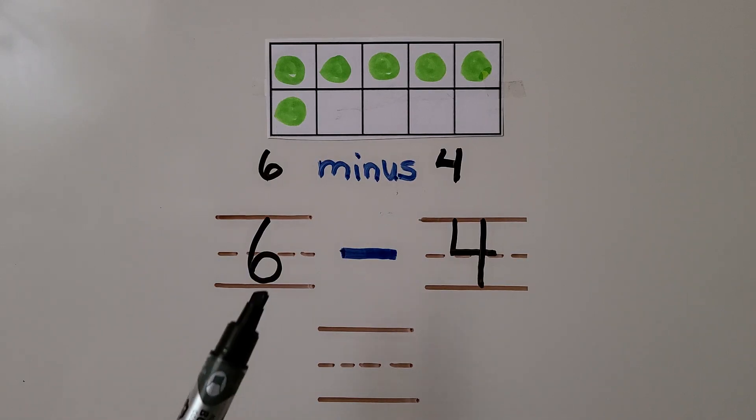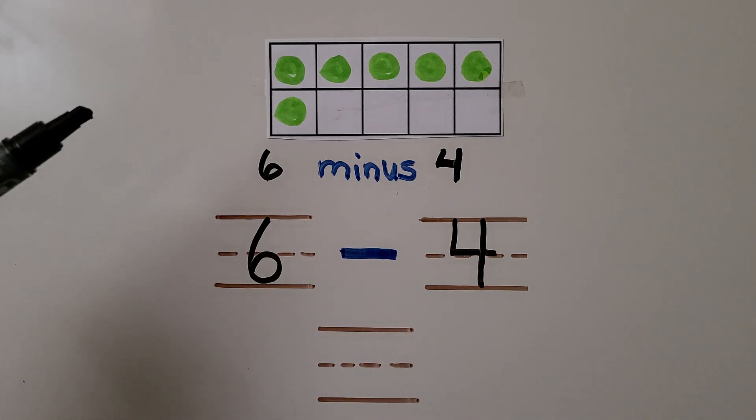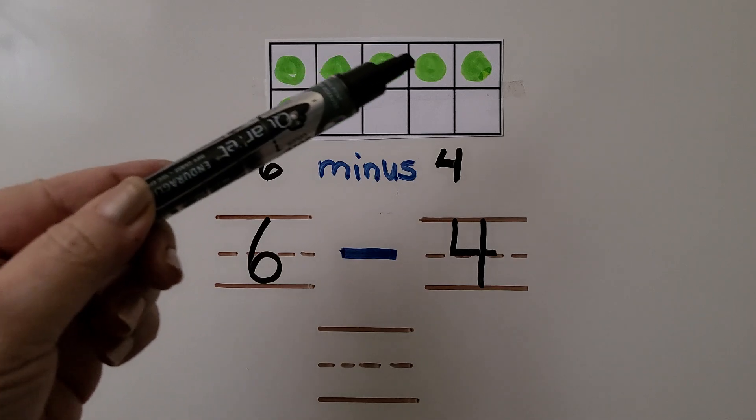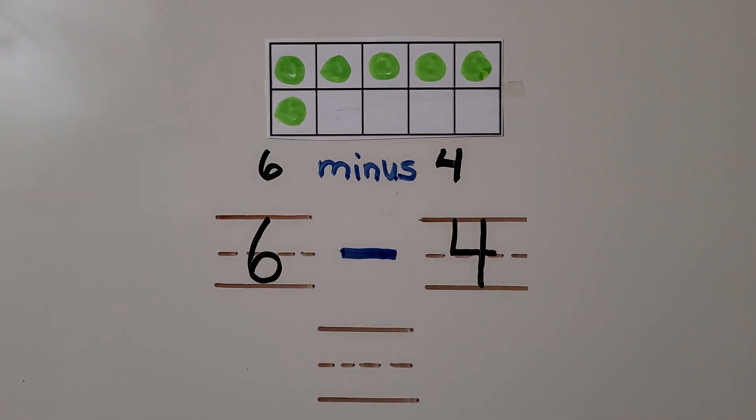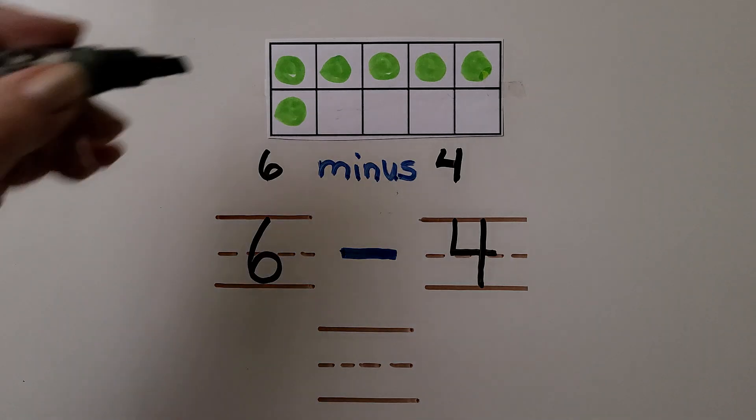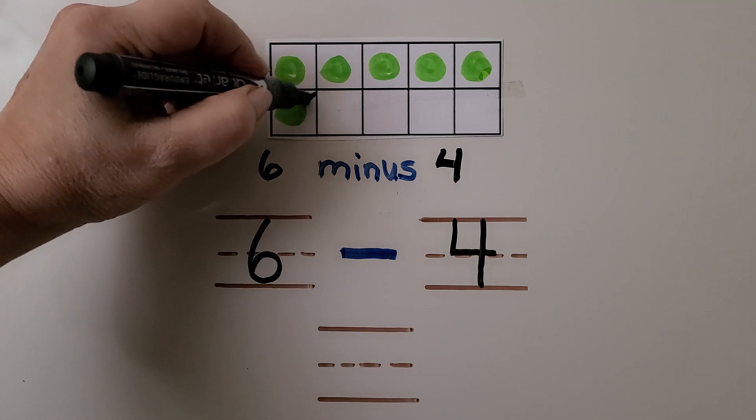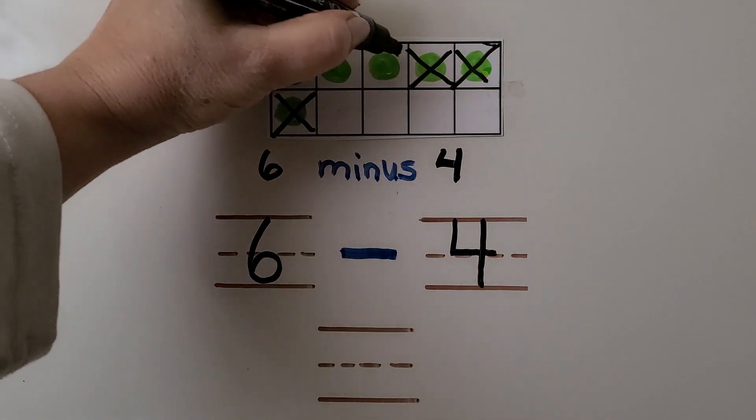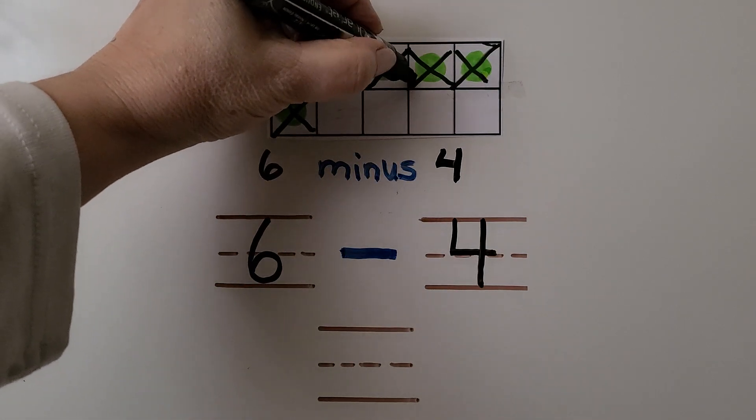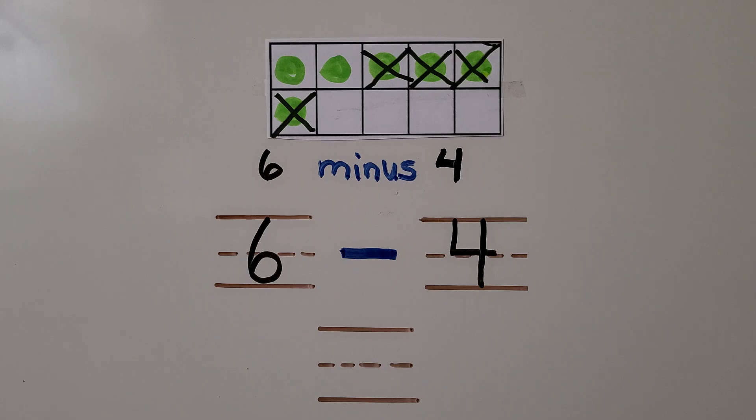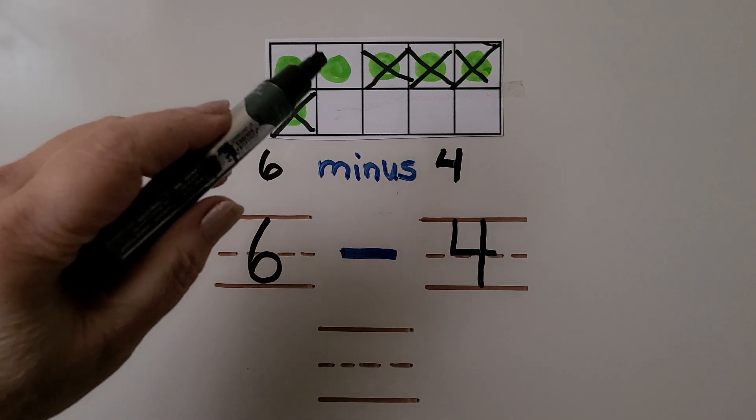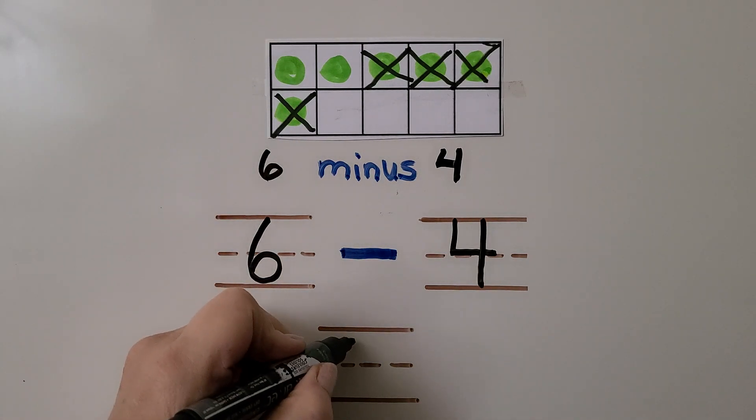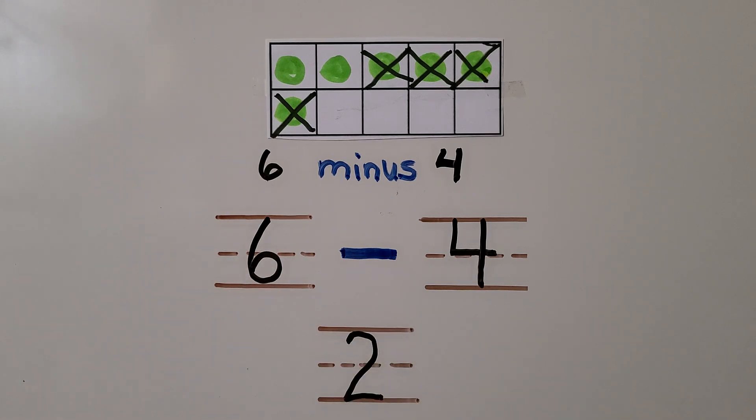Here we have 6 minus 4. We have 6 green counters: 1, 2, 3, 4, 5, 6. We need to take away 4. We can cross off 1, 2, 3, 4. Then we can count how many are left: 1, 2. There are 2 left.